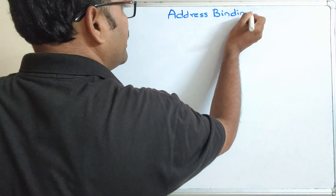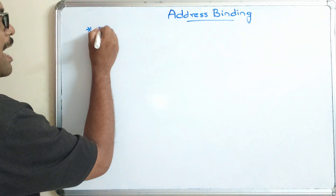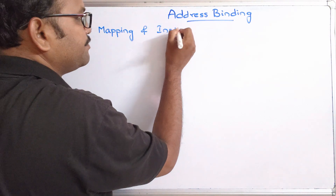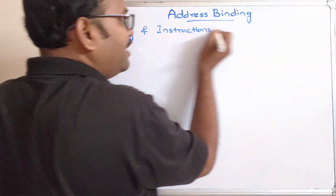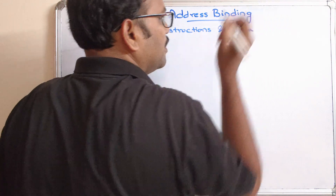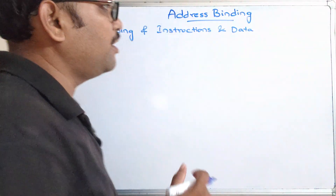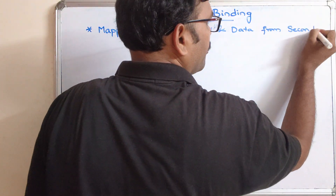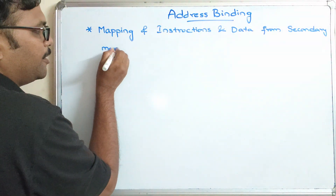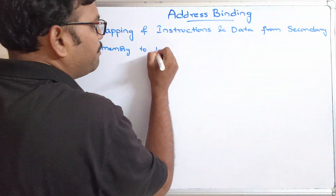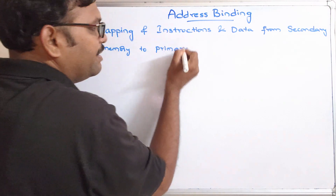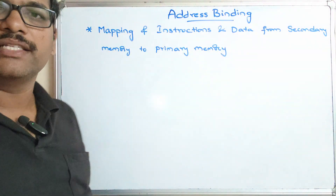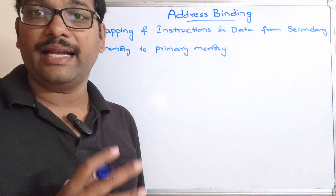The name itself indicates mapping of instructions and data — mapping of instructions and data from secondary memory, because all programs reside in secondary memory, to primary memory. Obviously, if any process wants to be executed it must first be loaded into primary memory. This is called address binding. There are three categories of address binding.